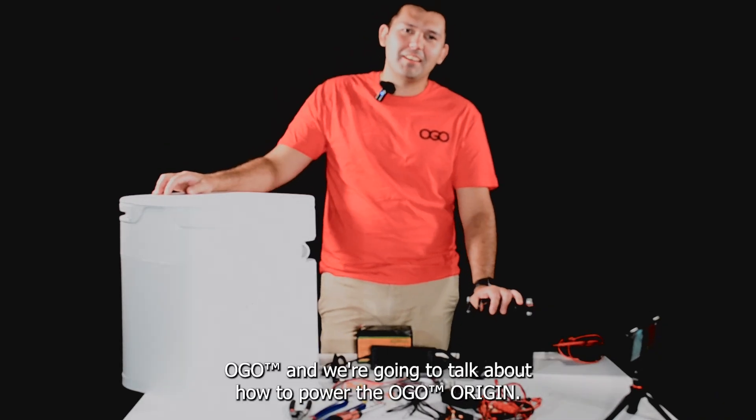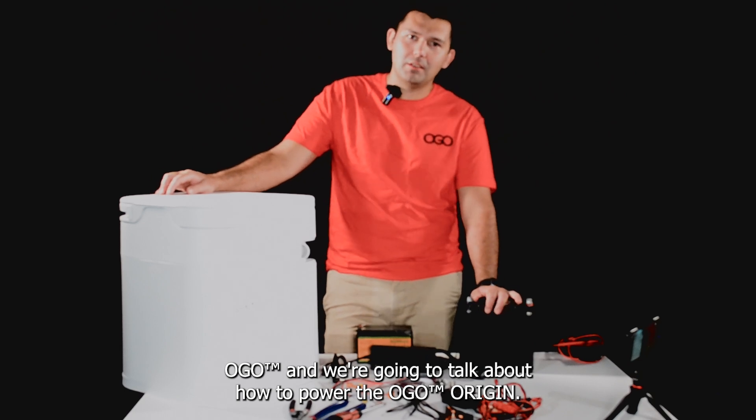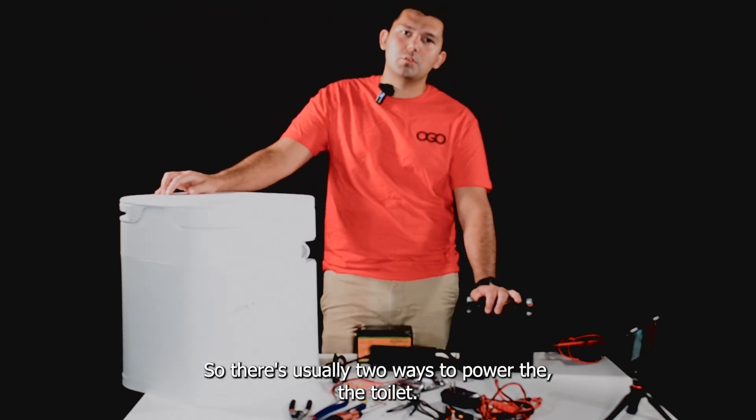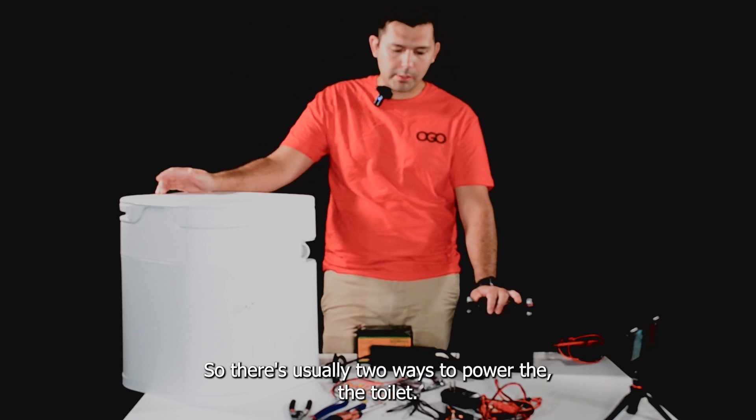This is Kevin with Ogo and we're going to talk about how to power the Ogo Origin. It's a 12 volt system, so there's usually two ways to power the toilet.